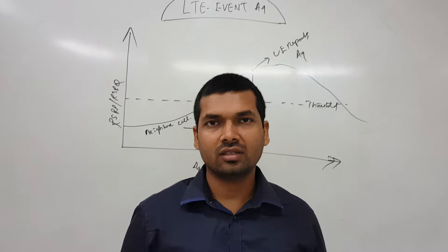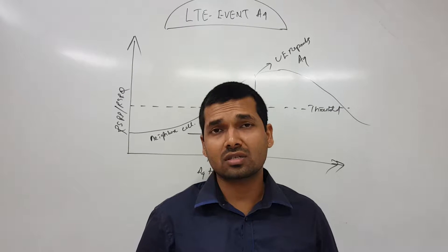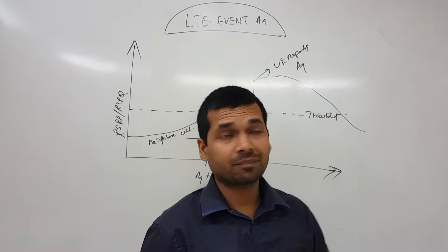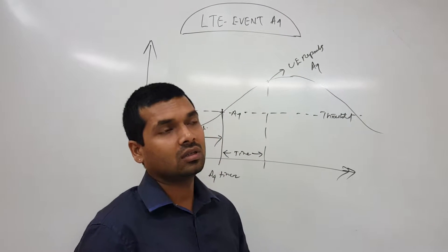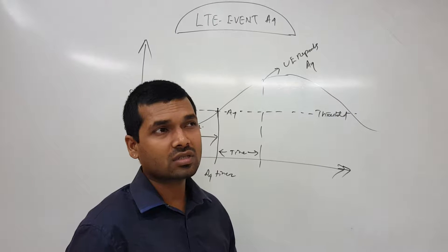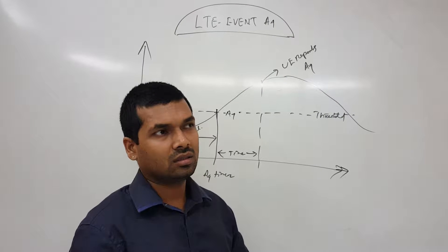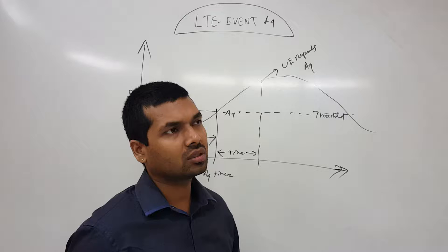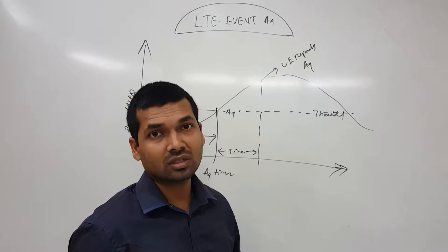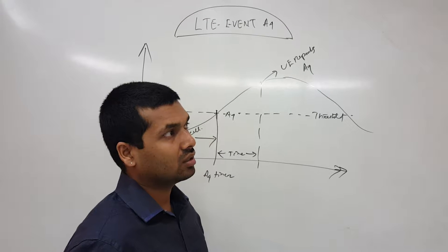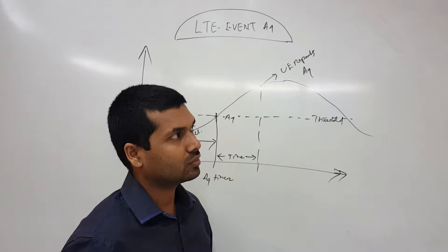Hello, I am Niladri. Today's session is on the A4 event. A4 is an event where the neighbor cell is better than a certain threshold. That is reported when the neighbor cell is becoming better than the serving cell.